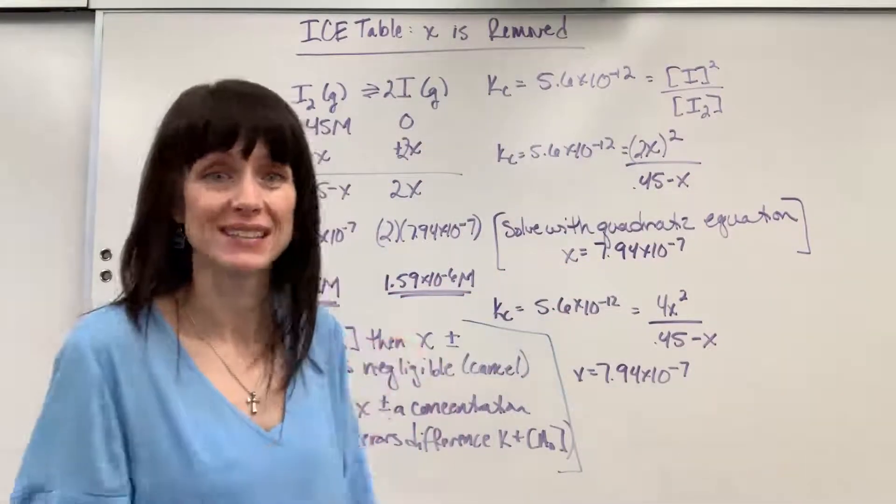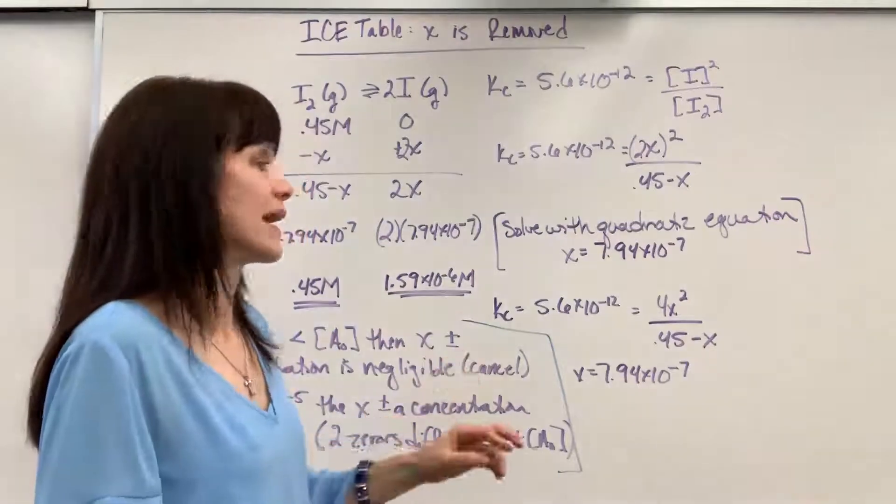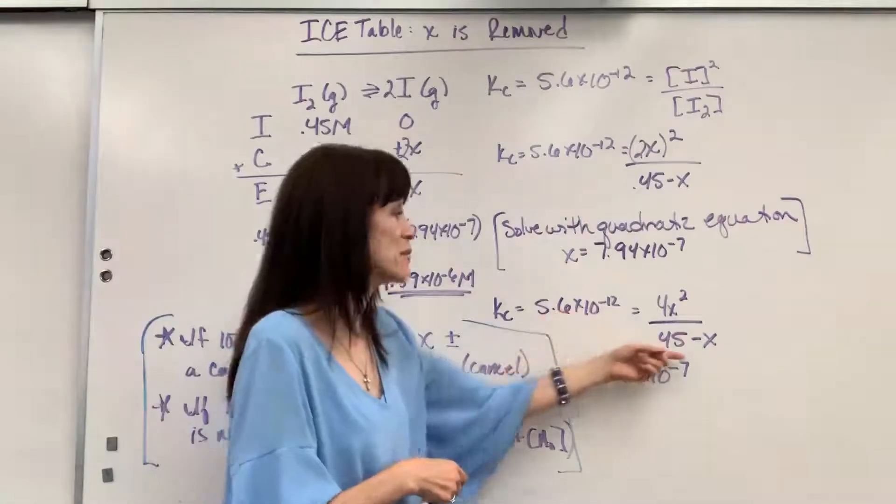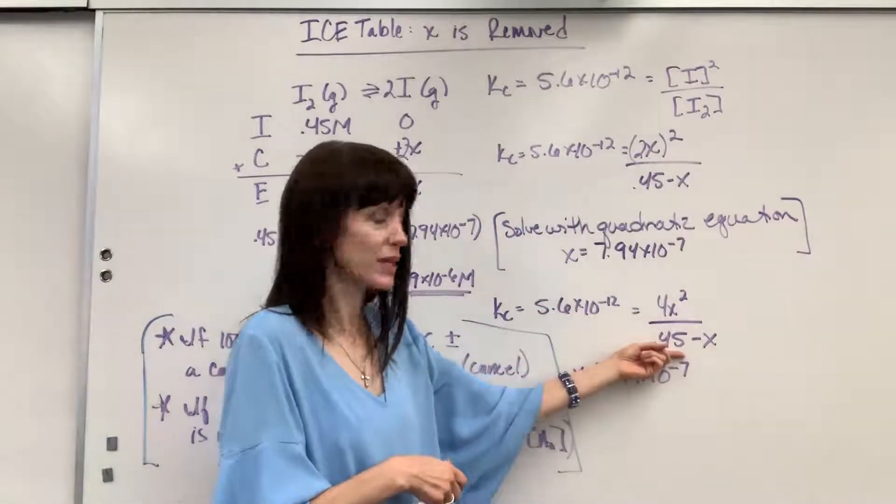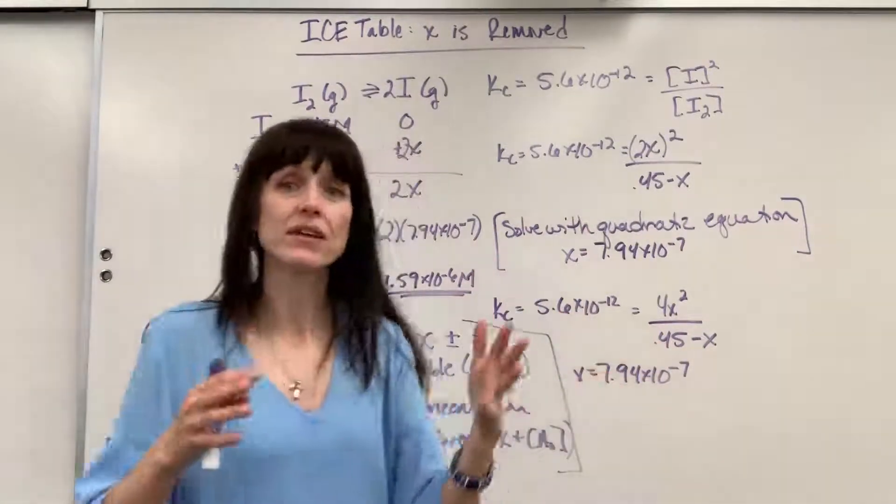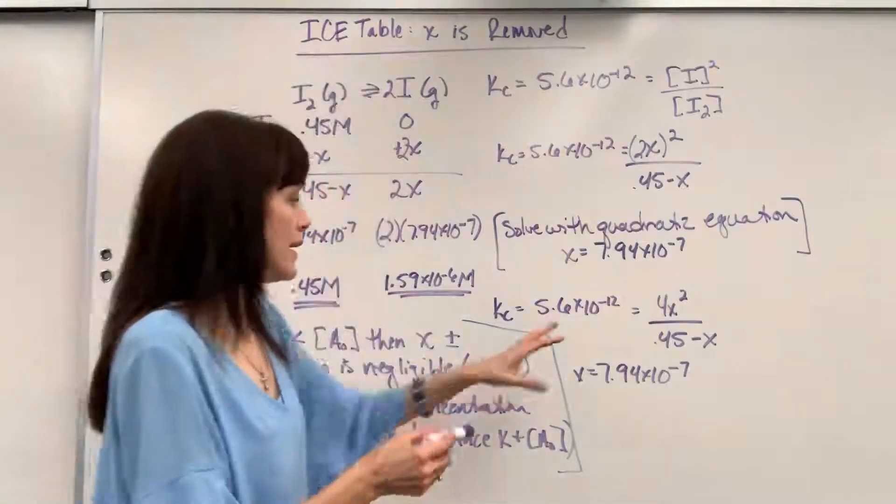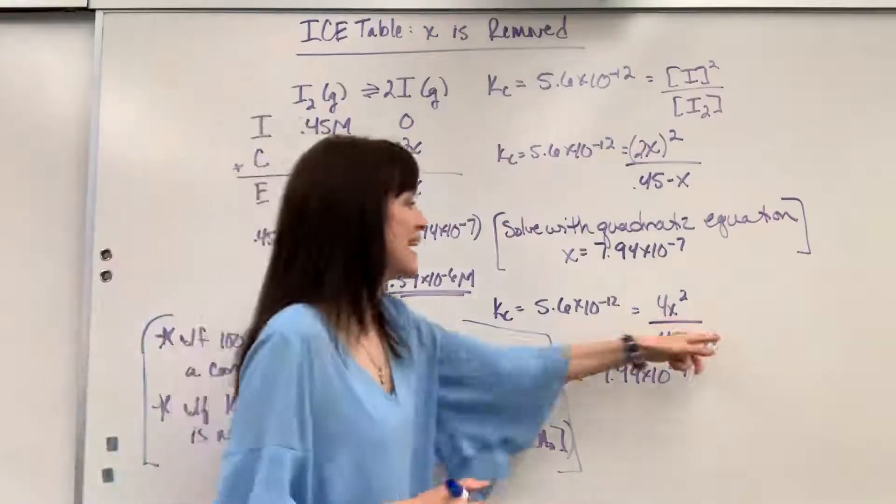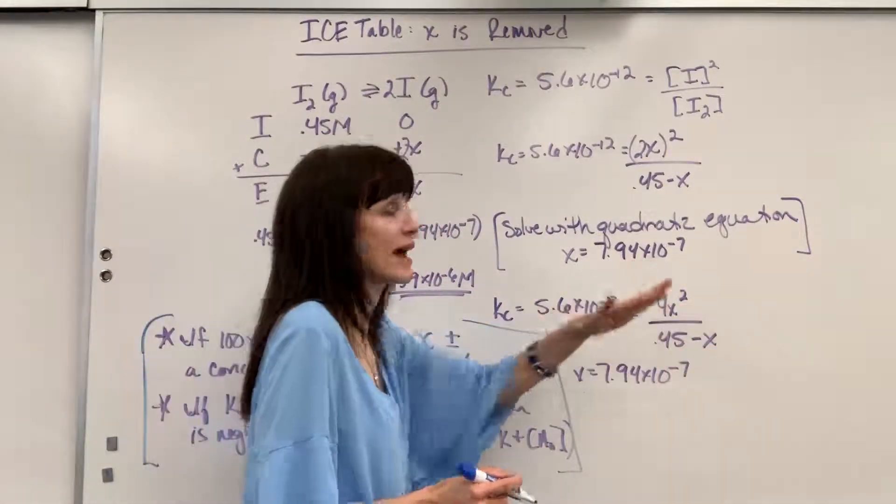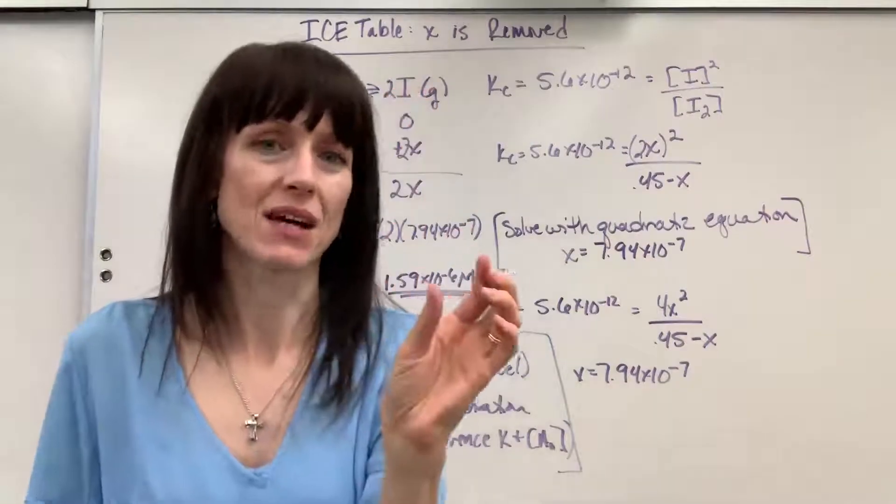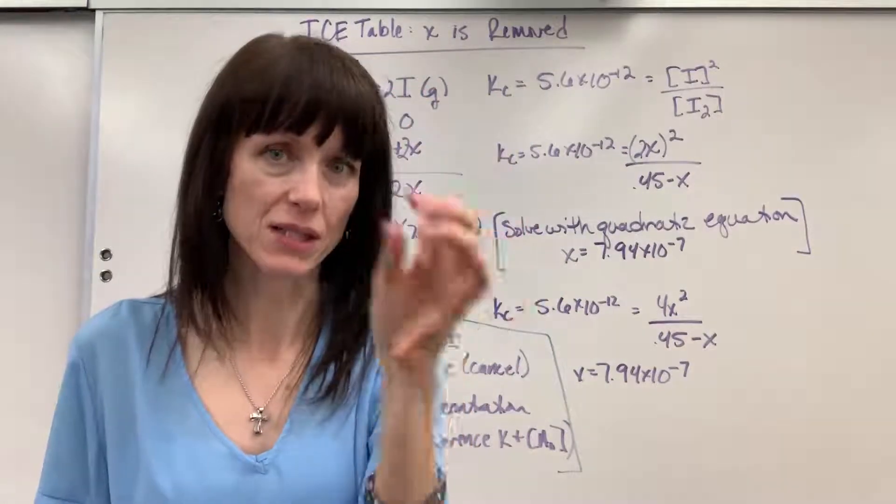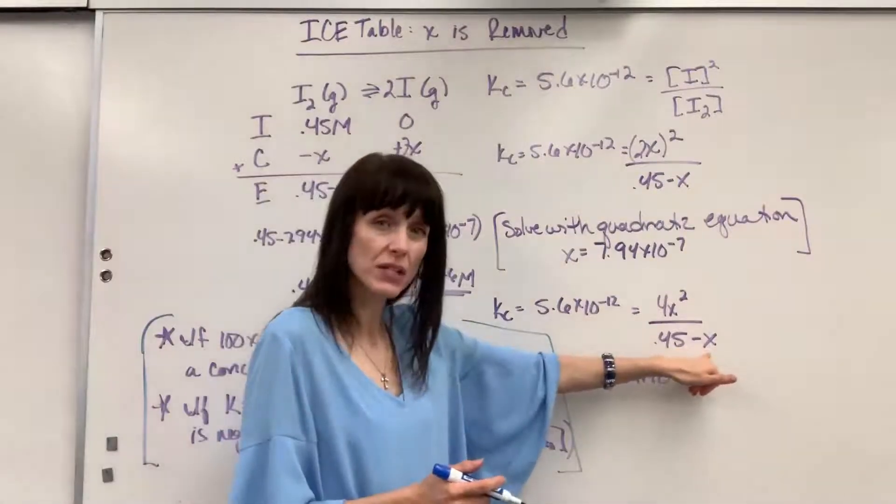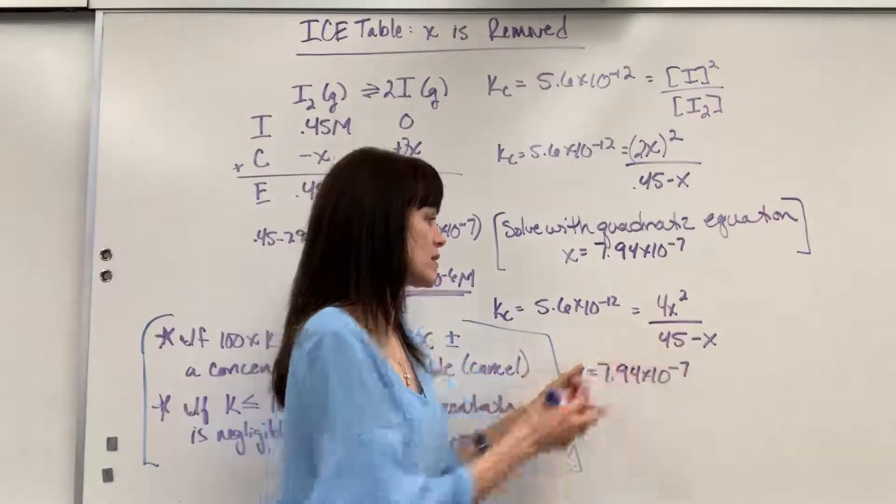Okay, now watch this. There is a large difference between the magnitude of the equilibrium constant and the magnitude of the concentration. We are, what, 11 zeros different. So in this example, what I did was the x next to a concentration. You can't cancel x if it's by itself, if it's just a number with x.